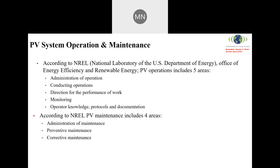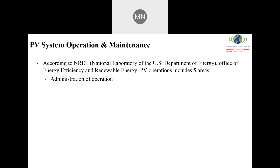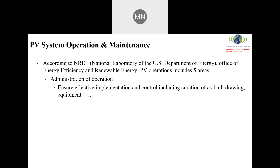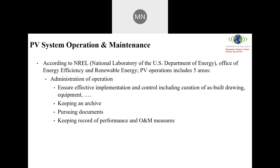In our next few videos we will discuss each item individually. Starting today with administration of operations: this involves ensuring effective implementation and control, including the curation of as-built drawings and equipment archives. You must pursue documentation, keep records of performance, operation, and maintenance measures, ensure compliance with regulations and standards, and ensure the yearly budget has a contingency plan for operation and maintenance.